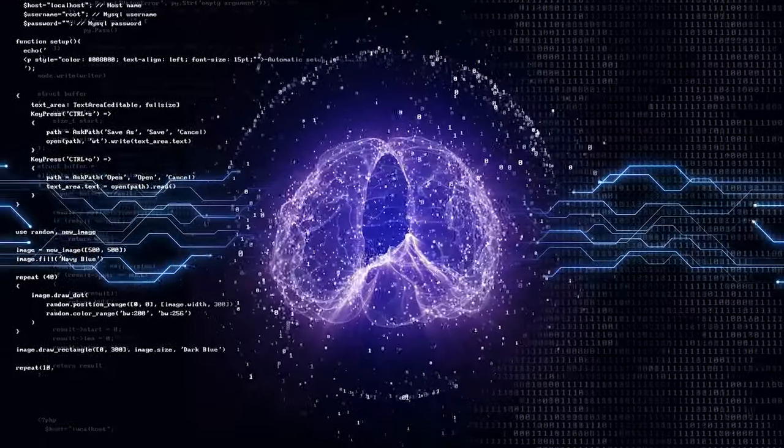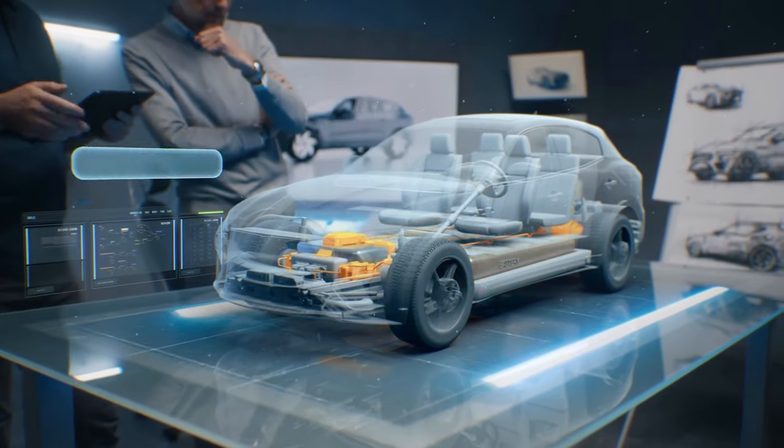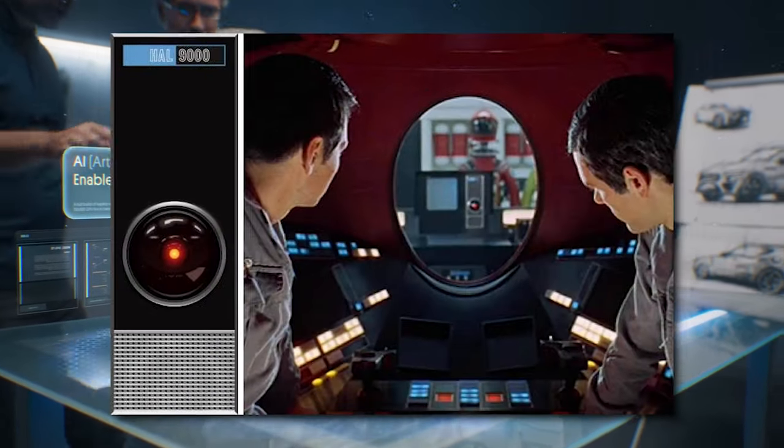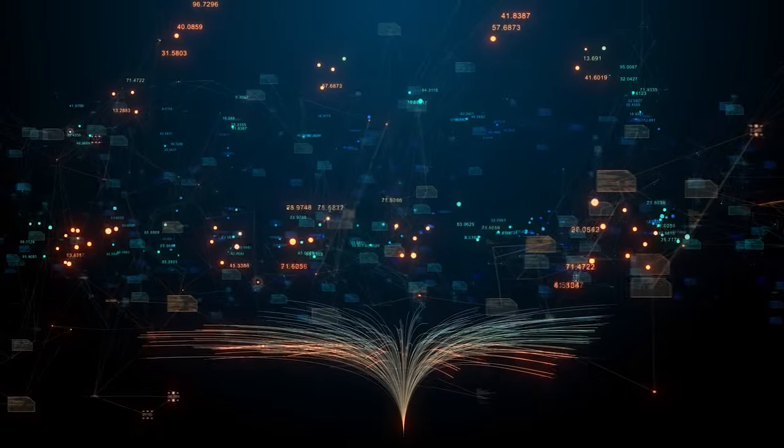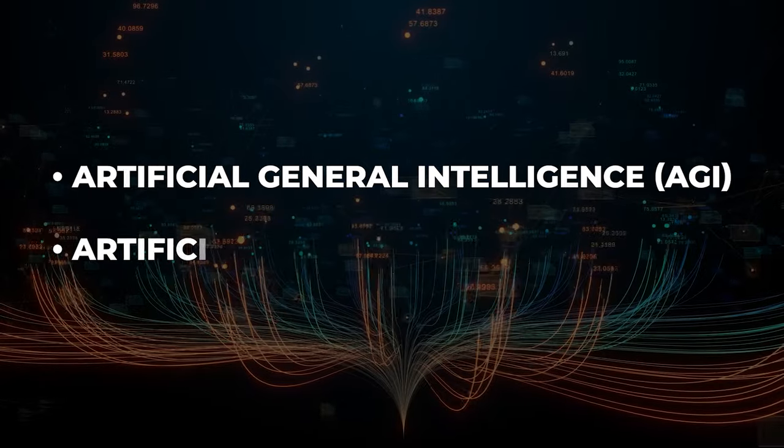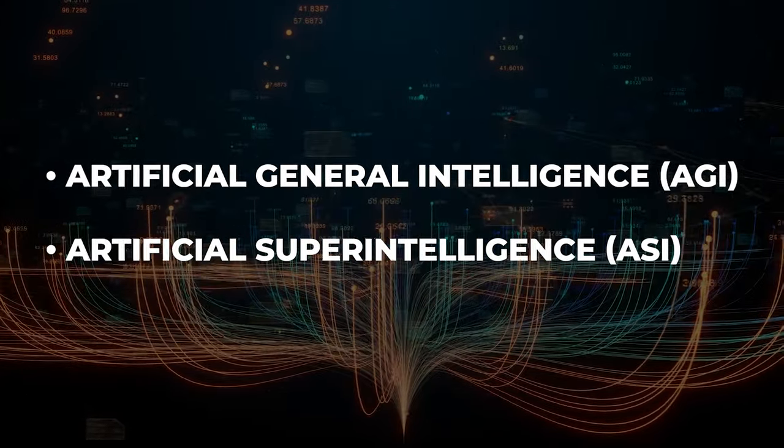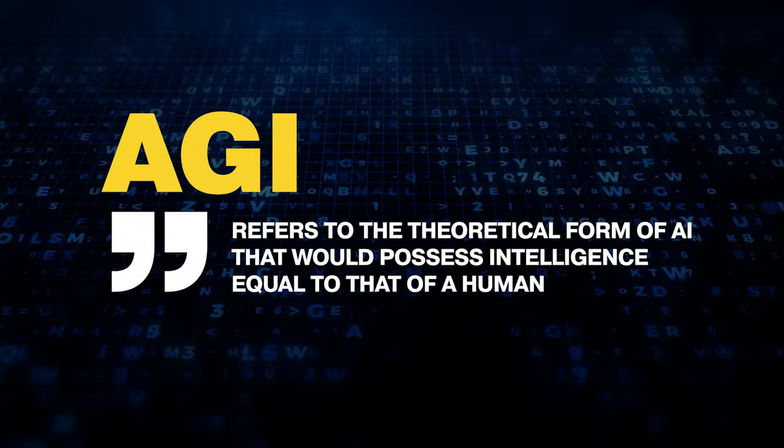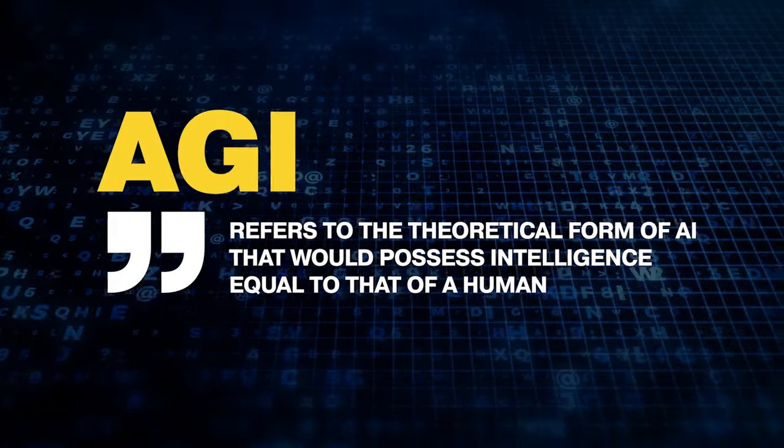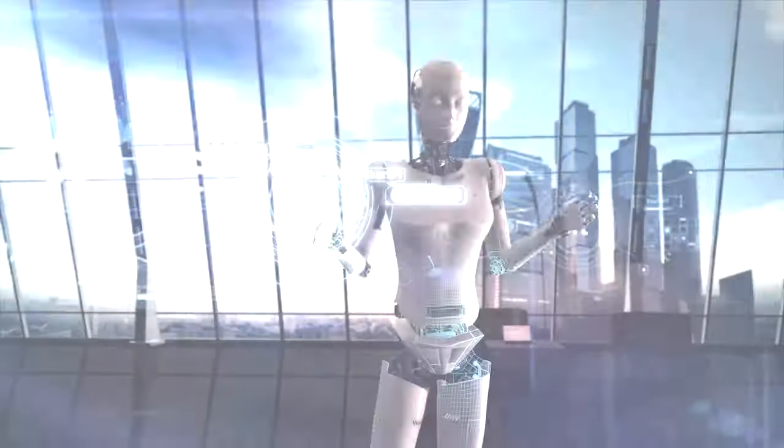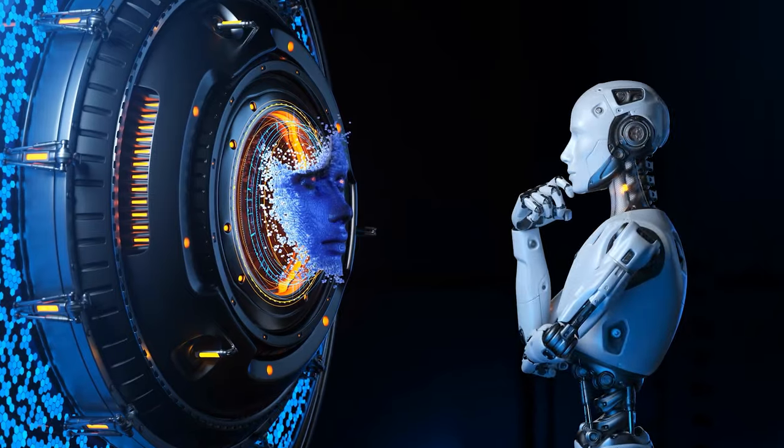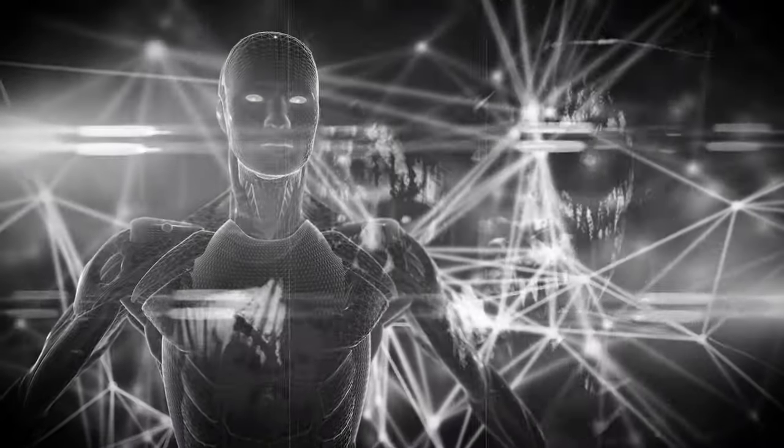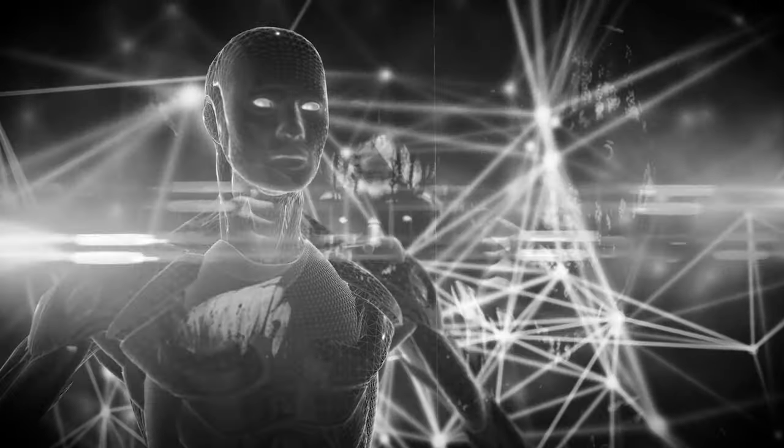On the other hand, strong AI represents the true heavyweights in the field. This category of AI is straight out of science fiction, with the potential to make even the likes of HAL 9000 seem like a mere child's toy. Strong AI is further divided into two types: artificial general intelligence, AGI, and artificial super intelligence, ASI. AGI refers to the theoretical form of AI that would possess intelligence equal to that of a human, exhibiting self-awareness, problem-solving abilities, and the capacity to plan for the future. ASI, however, is the stuff of nightmares, a form of AI that would surpass human intelligence in every conceivable way, potentially leading to machines capable of ruling the world.